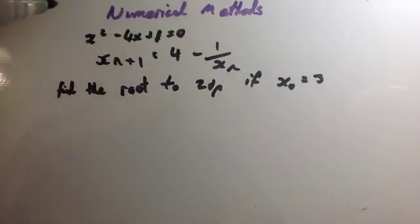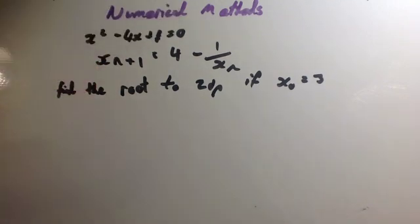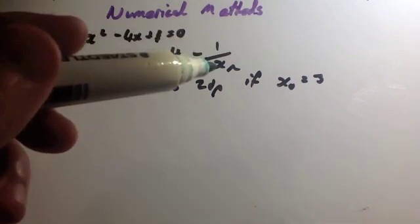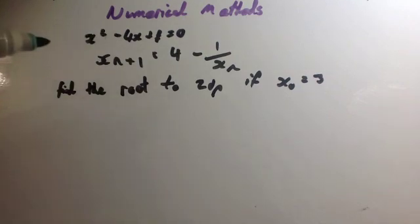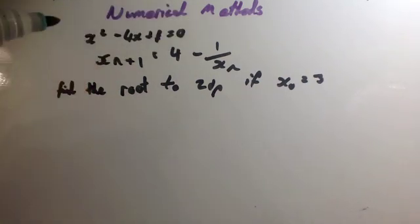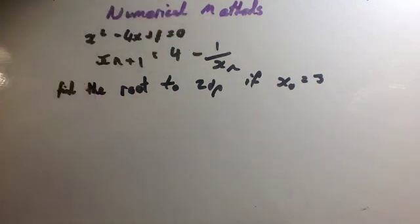Okay, so also you may be given an equation. Here I've got one: x squared minus 4x plus 1 equals 0. The first part of the question may ask you to get it into some particular form. And here we've rewritten to get x n plus 1 equals 4 minus 1 over x n. To do that, the 4x would have been brought over to the other side, the 1 would have been brought over, and then divided through by x to get 4 minus 1 over x.